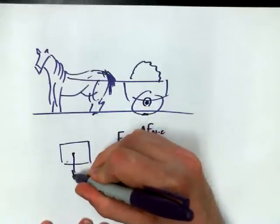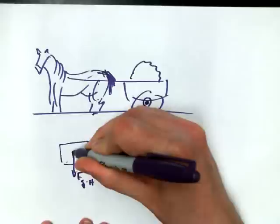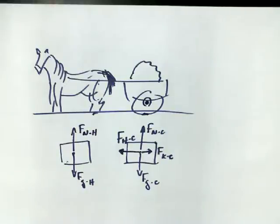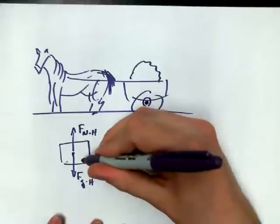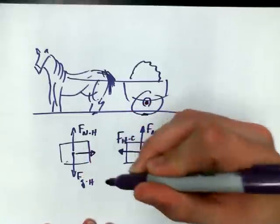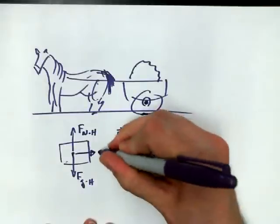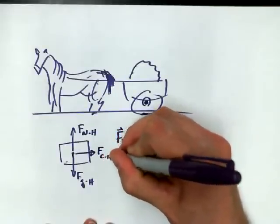With respect to the horse though, we've got force of gravity acting on the horse. We've got force normal acting on the horse. What's a force that could be pulling back on the horse? The cart. So that's the action-reaction force pair to this guy right here. Force of horse on cart. I've got force of cart acting back on the horse.